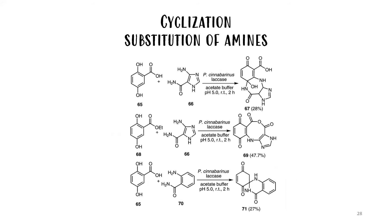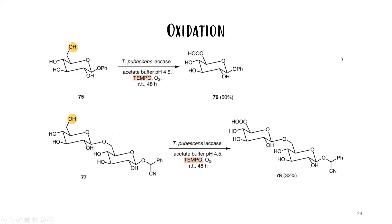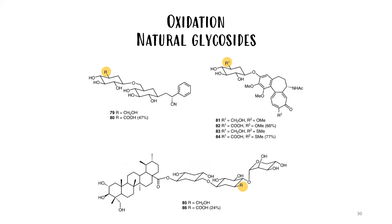Another example is substitution of amines generating seven-, eight-, or six-membered rings. In natural product synthesis, regioselective oxidation of primary alcohols is quite important. This can already be done with TEMPO alone, but if you use it with a lacase, you need TEMPO only in catalytic amounts. This approach was used on some natural glycosides to obtain the corresponding carbonyl groups from alcohols.